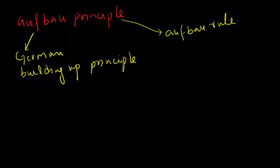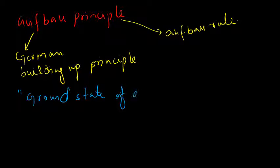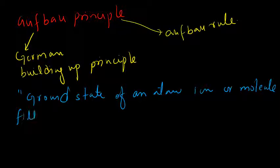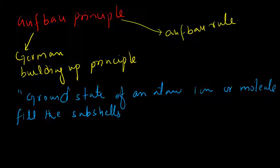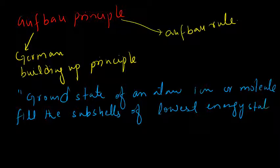We can state the Aufbau principle as follows: in the ground state of an atom, ion, or molecule, the sub-shells of lowest energy state are filled first. This means the sub-shell with the lowest energy will be filled first, and then electrons will go to the sub-shell with higher energy.